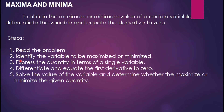There are five steps. Step one: read the problem and understand it. Step two: identify the variable to be maximized or minimized, or figure out what that variable is.